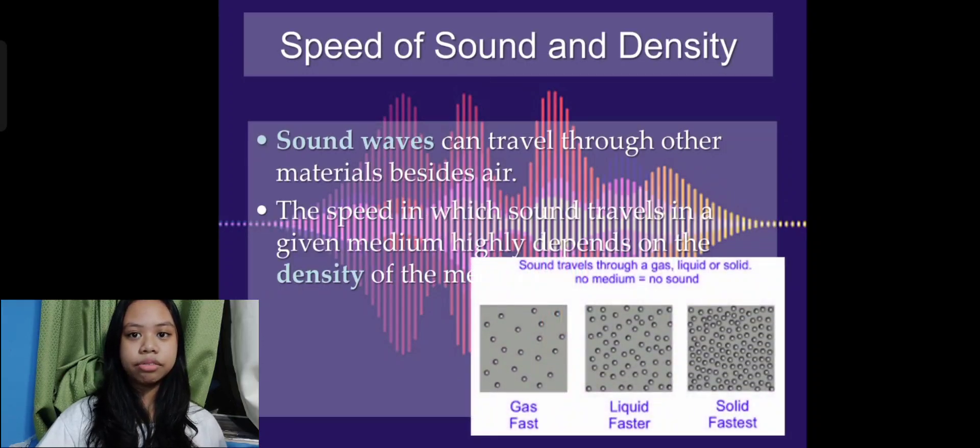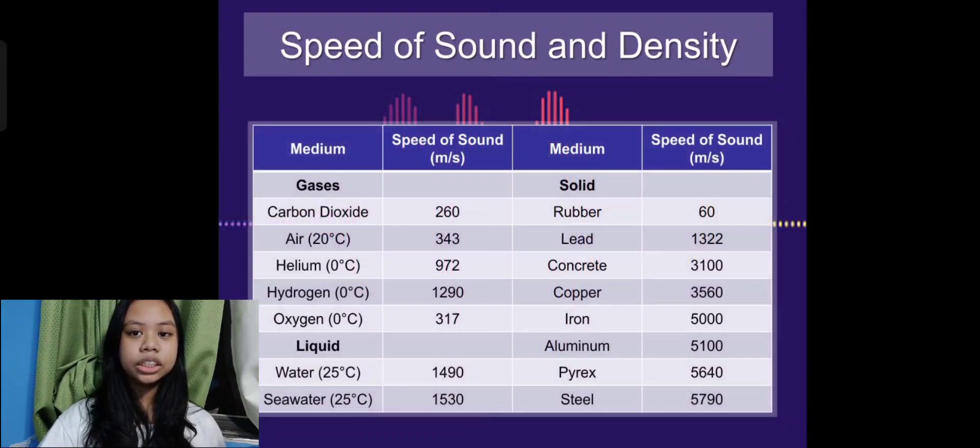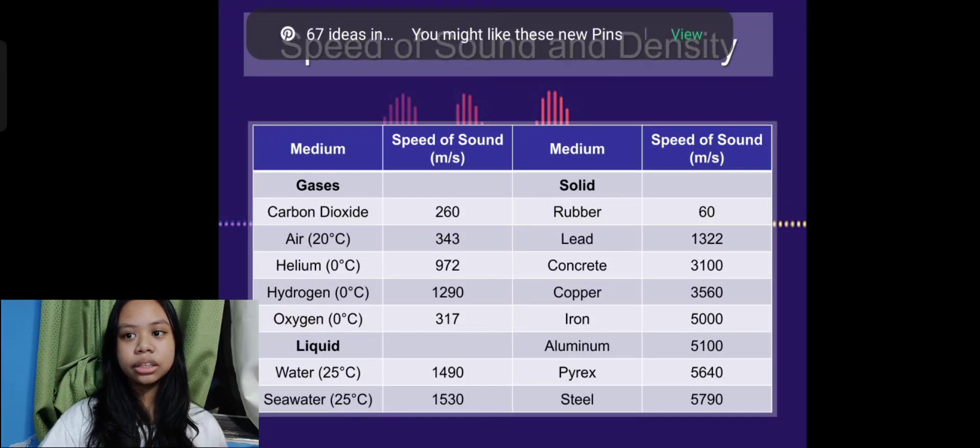Sound waves can travel through other materials besides air. The speed in which sound travels in a given medium highly depends on the density of the medium. Sound is usually fastest in solids where its molecules are closest together and slowest in gases where molecules are farthest apart. Here are some examples of the speed of sound in different materials that are classified as solid, liquid, and gas.